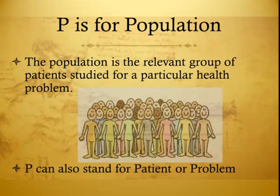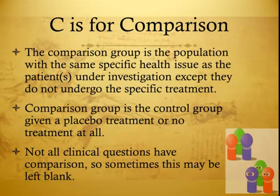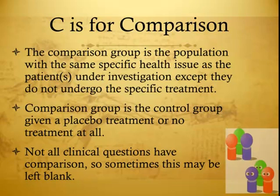The Population is the relevant group of patients studied for a particular health problem. Intervention is the treatment considered for the patient with the health problem under investigation. The Comparison group is the population with the same specific health issue as the patient, except they do not undergo the specific treatment.